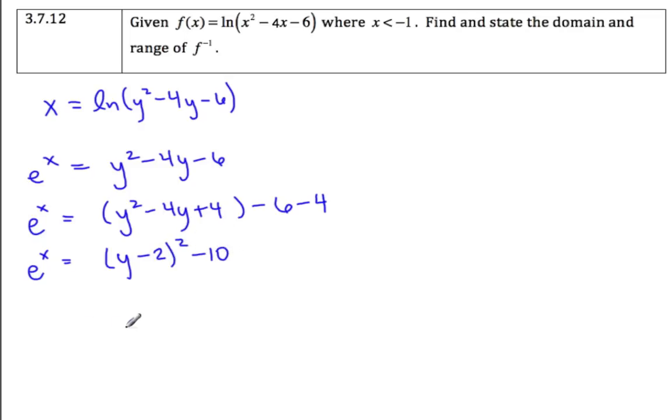And now I can start solving for y, so I have e to the x plus 10 equals y minus 2 squared. So then 2 plus or minus the square root of e to the x plus 10 is equal to y.